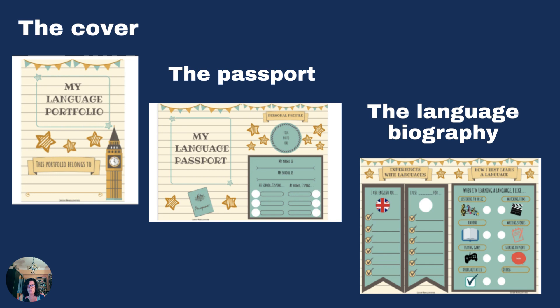The passport may also include, for example, a ticket to a theatre production in English, a film they saw, or a trip abroad to an English-speaking country. Then we have the language biography, which is the documentation of the learner's personal language learning history. It can include, for example, a short narrative about a summer camp they attended, for which they may include a certificate of attendance in the passport section.